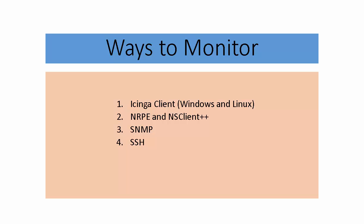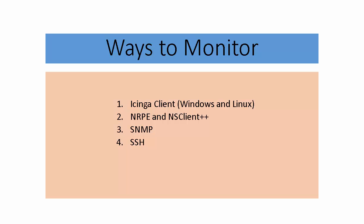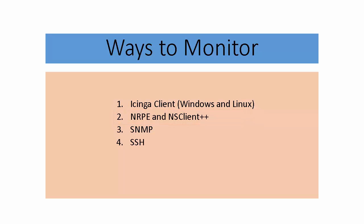One way to do it is setting up Icinga 2 clients, which offers better data encryption between master and clients. We can also use traditional monitoring platforms like NRPE for Linux and NSClient++ for Windows. For systems like routers, or if a plugin is not available, we can fall back to monitoring using SNMP. Last but not least, we can even monitor using simple SSH.